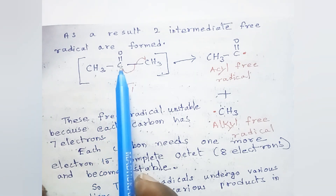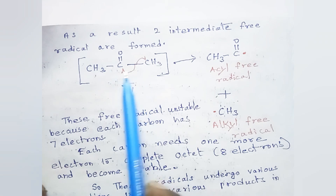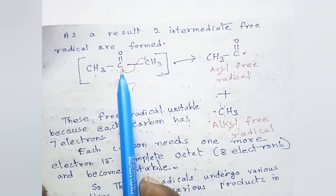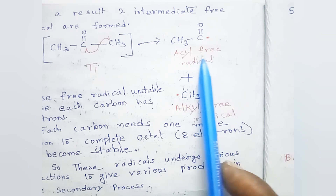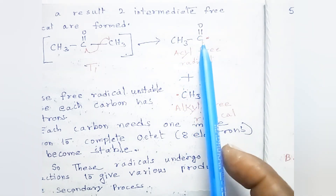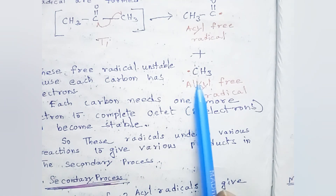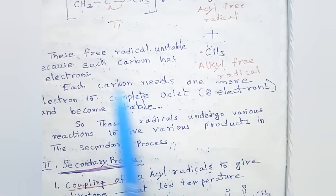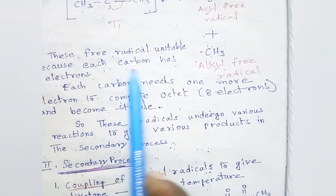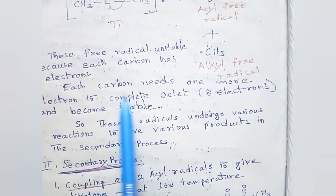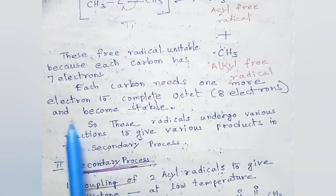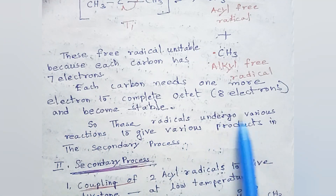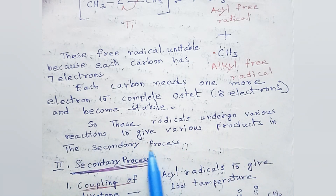The alpha bond between CH₃ and C=O has cleaved, giving one electron to C=O and another to CH₃. As a result, an acyl free radical (CH₃–C=O•) and an alkyl radical (CH₃•) are formed. These free radicals are unstable because each carbon atom has only 7 electrons; each carbon needs one more electron to complete its octet. So these radicals undergo various reactions to give various products in the secondary process.